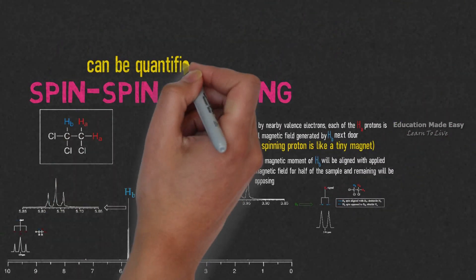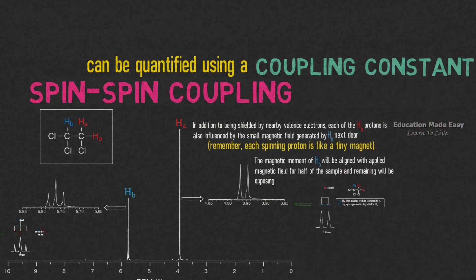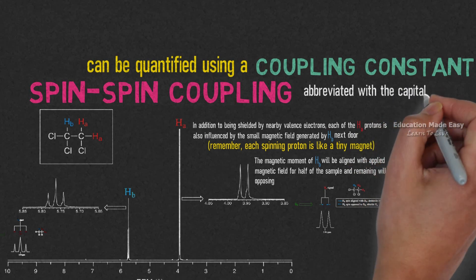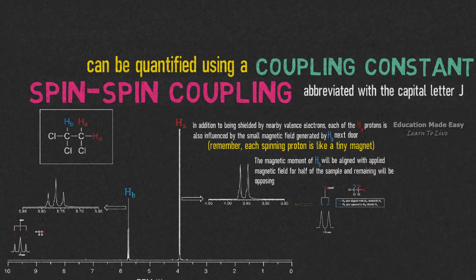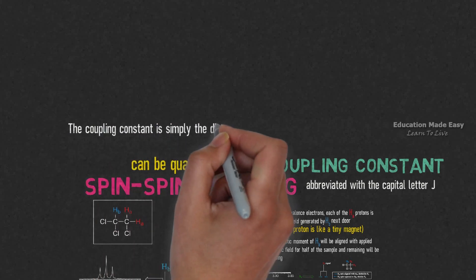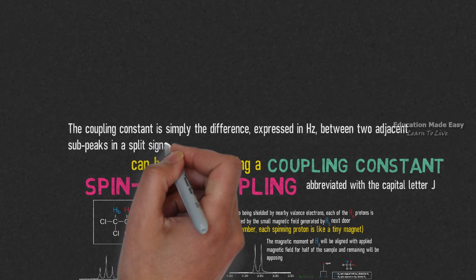The spin-spin coupling can be quantified or measured using a coupling constant. The coupling constant is abbreviated or denoted by capital J. Coupling constant is simply the difference between two adjacent sub-peaks in a split signal, expressed in hertz.